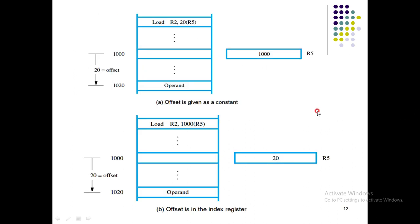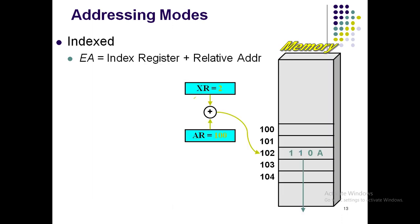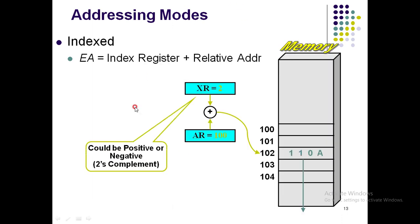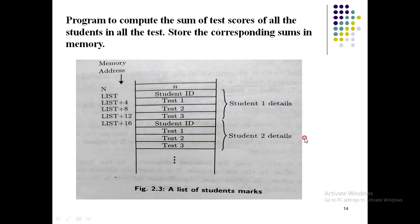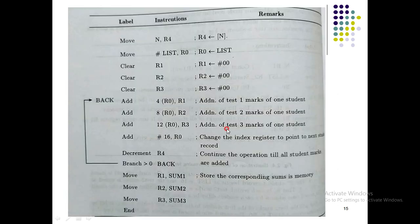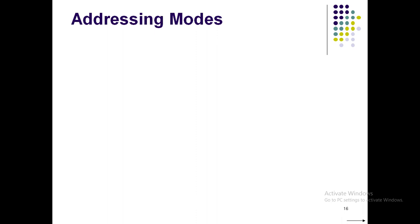We discussed all three methods and went through the diagram of how the effective address is generated. We also saw an important example where we calculated the sum of test scores of students. That was the end of the indexed addressing mode. Moving ahead, we will now cover one special addressing mode called relative addressing mode, which is the last topic in the addressing modes unit.